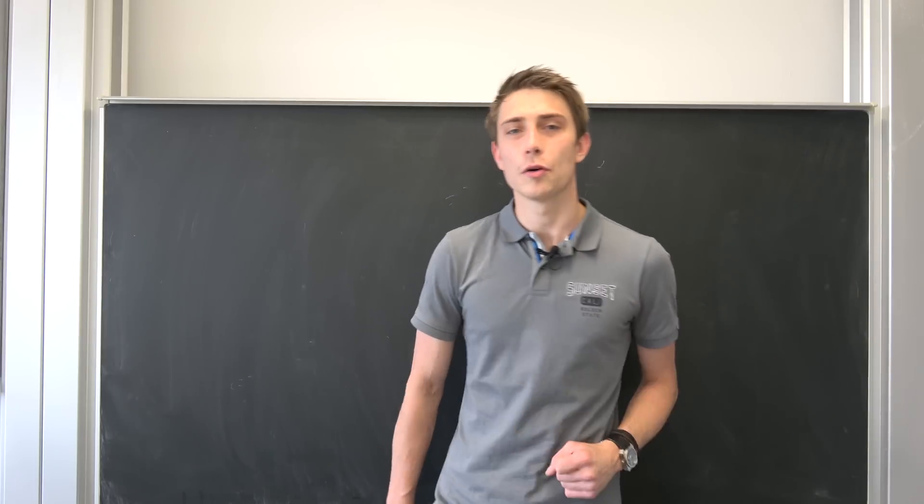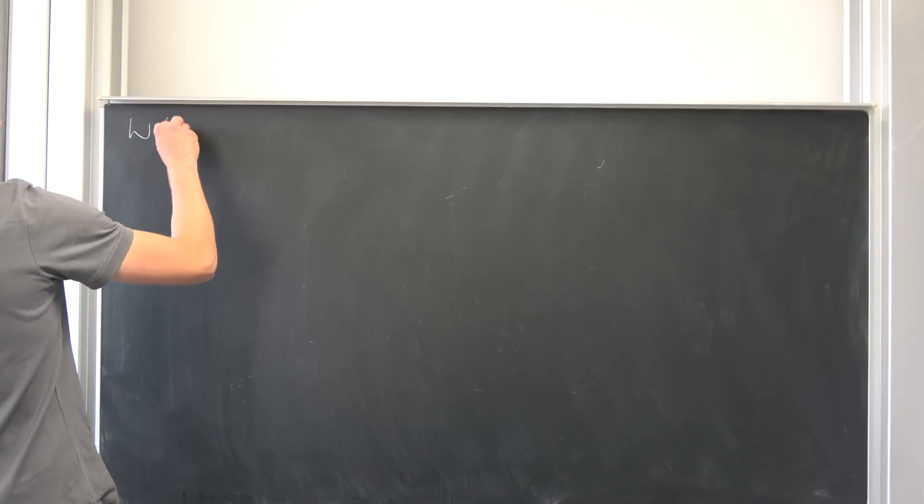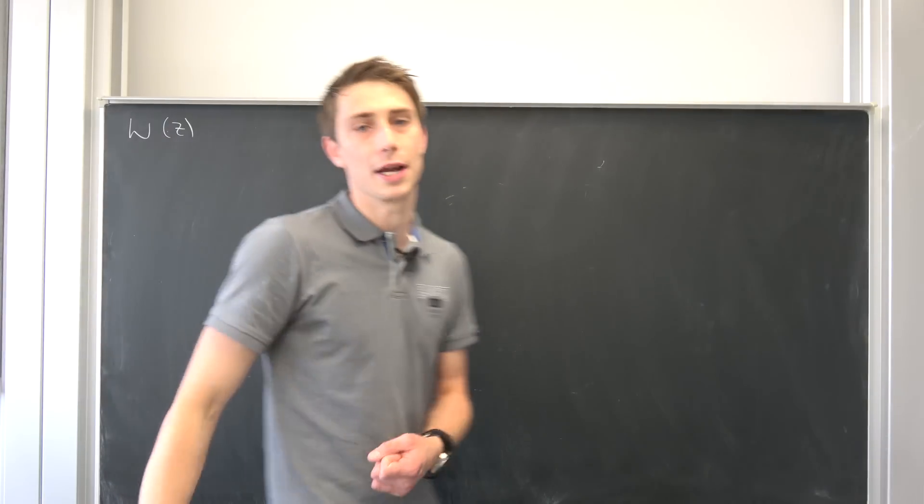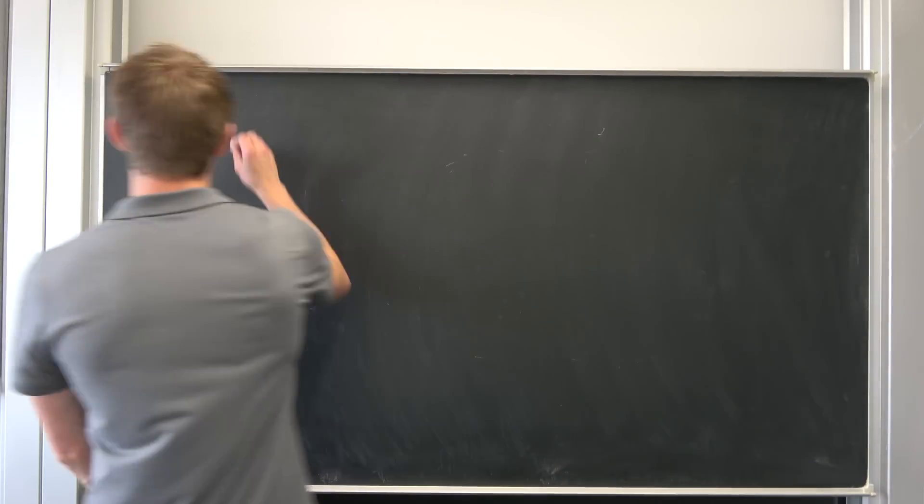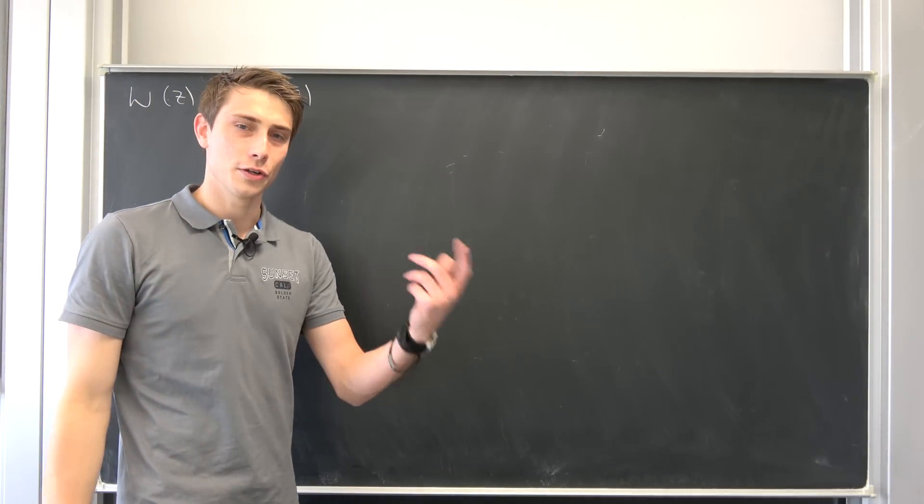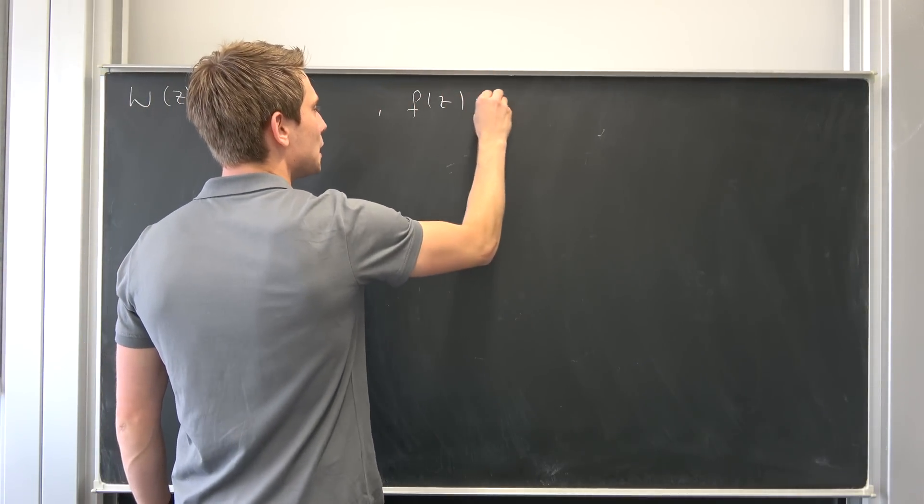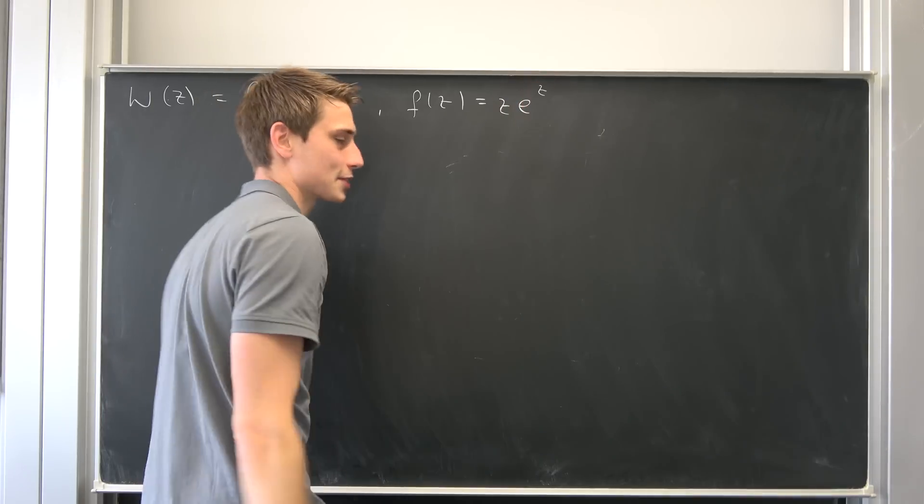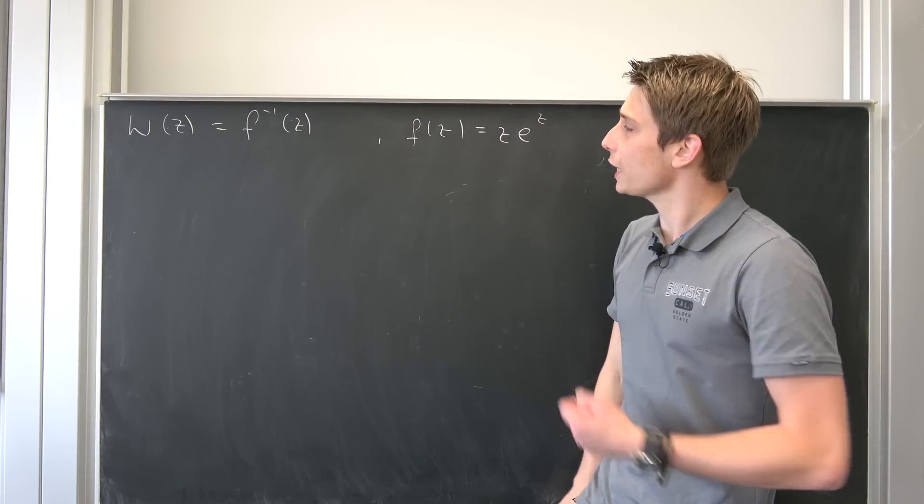First I would like to recall what the Lambert W function actually is. It's denoted by capital W of z, and this thing is defined as some kind of inverse function, f to the negative 1 of z, of some function that we're going to call f of z being equal to z times e to the z. This is just the pure definition of the Lambert W function.